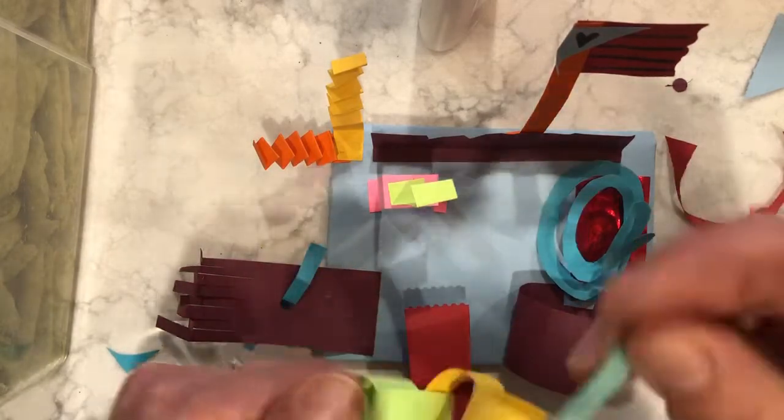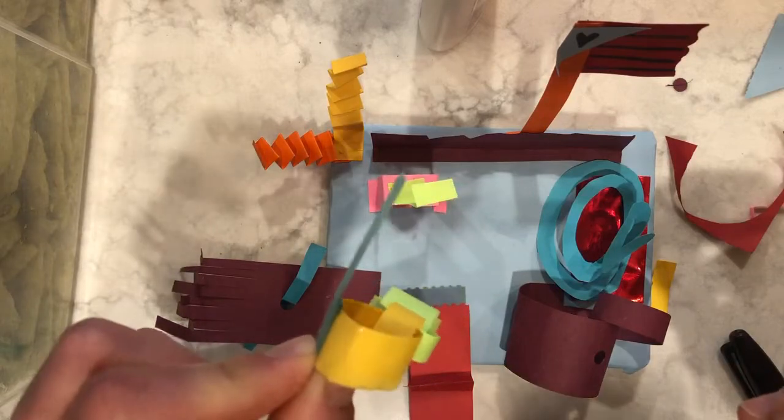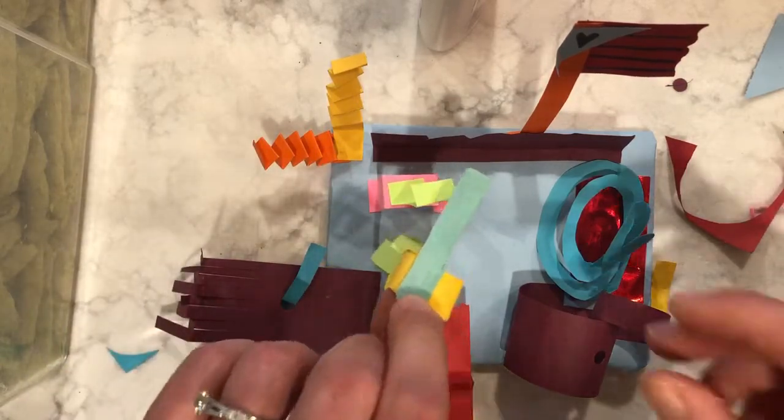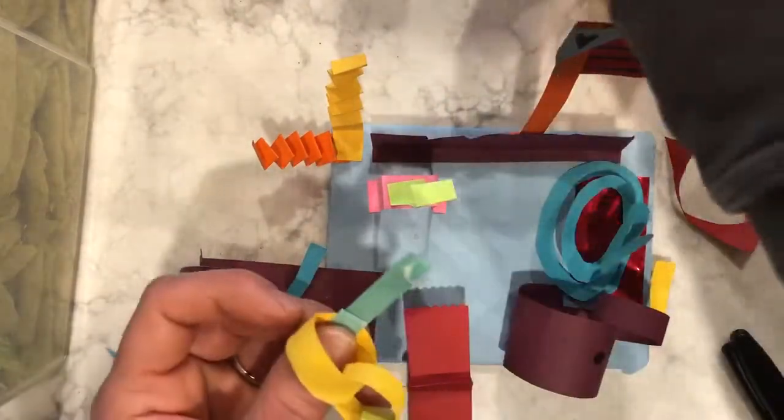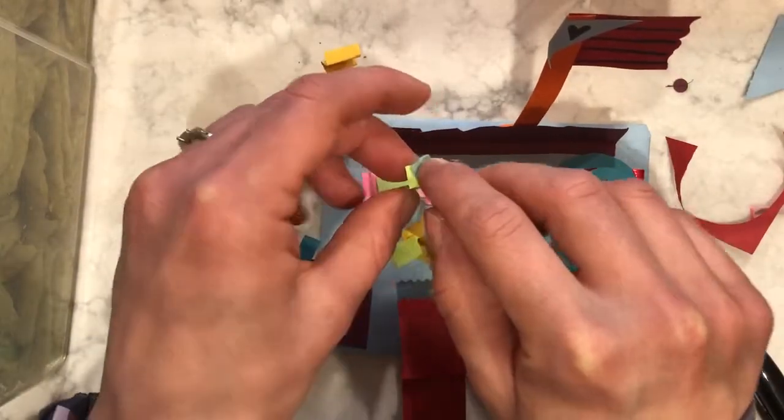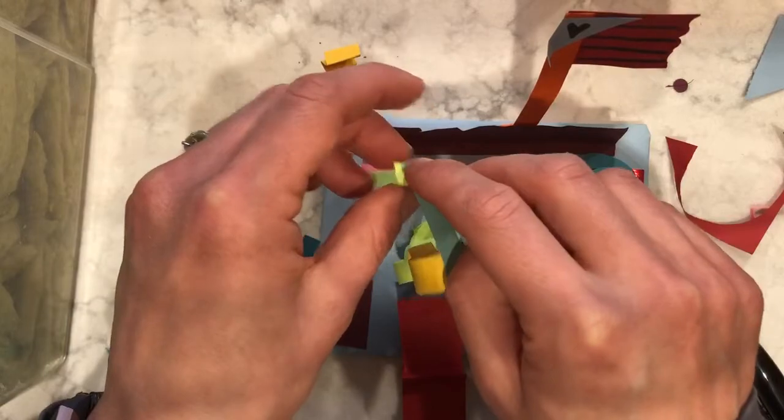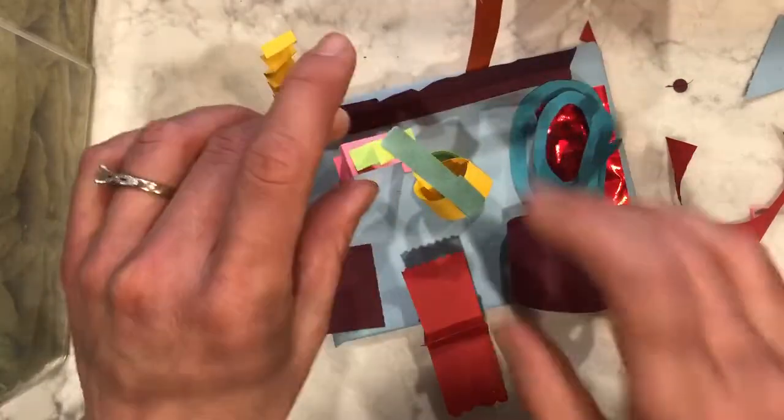And then I found out that this needed help being attached. So I added a little piece like that. This is a lot of problem solving because you're going to find that as you go to put pieces together, they're either going to be too heavy, too tall, too short, not able to be glued for one reason or another. So you, the artist, are going to need to problem solve.